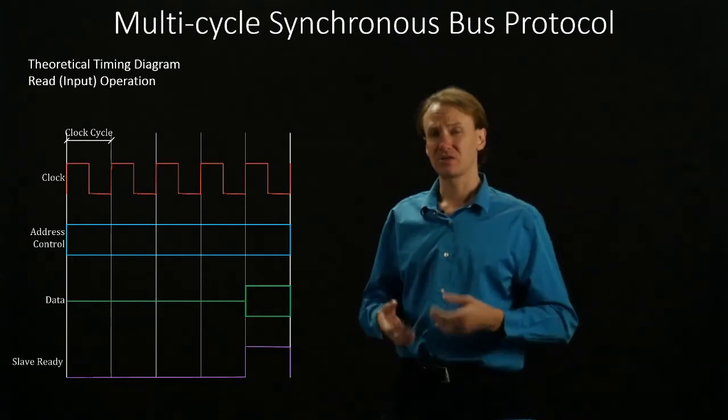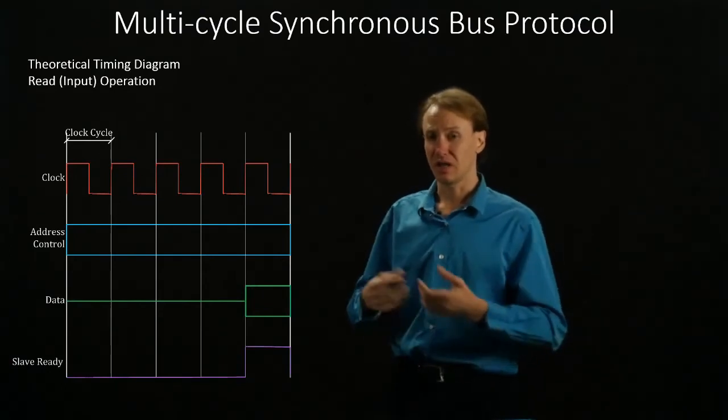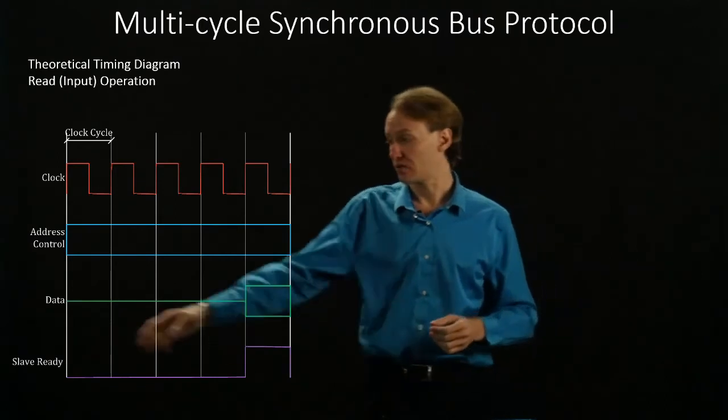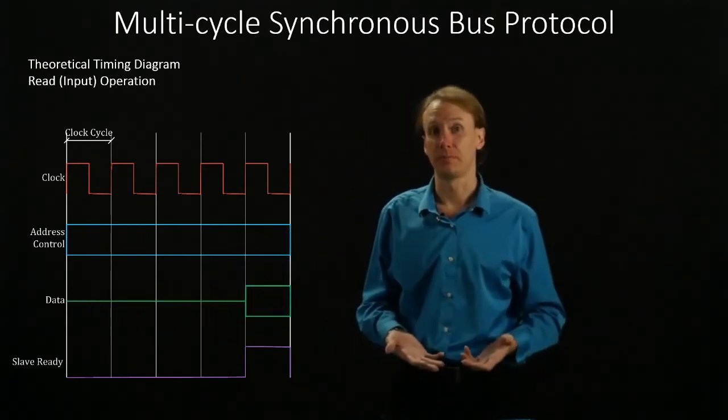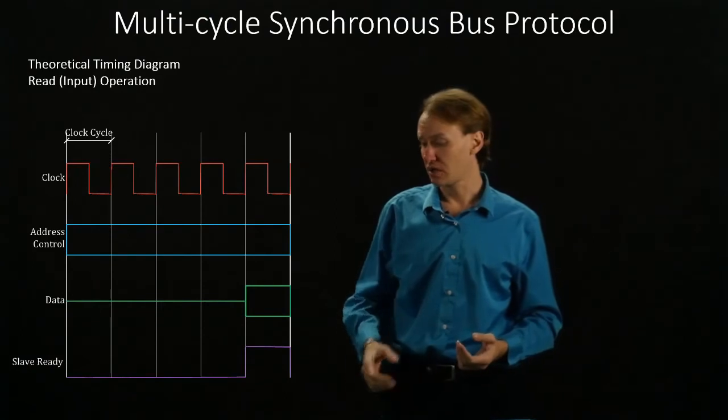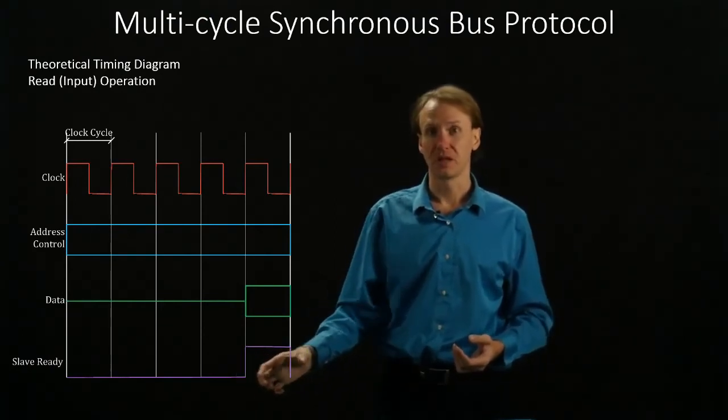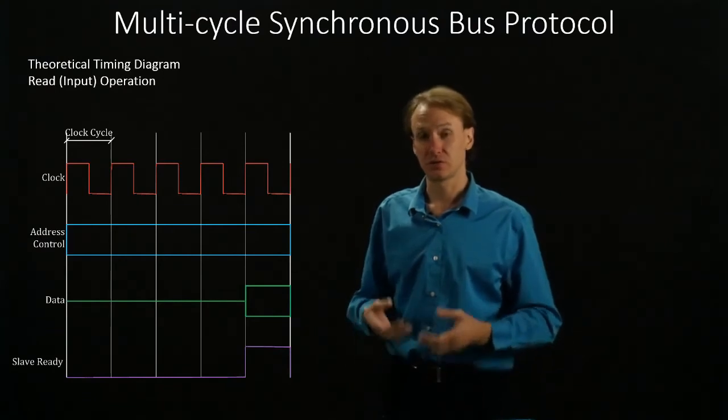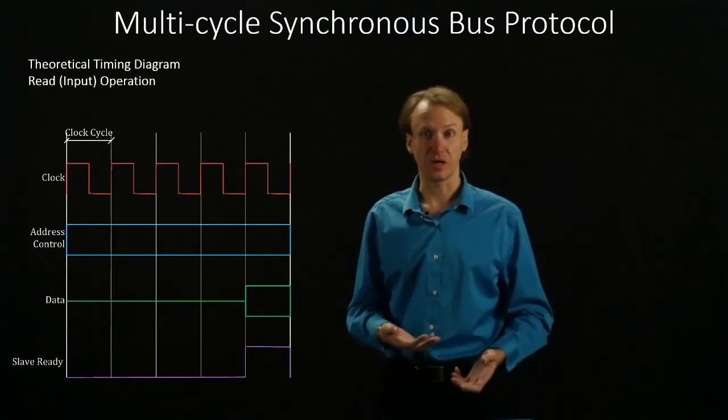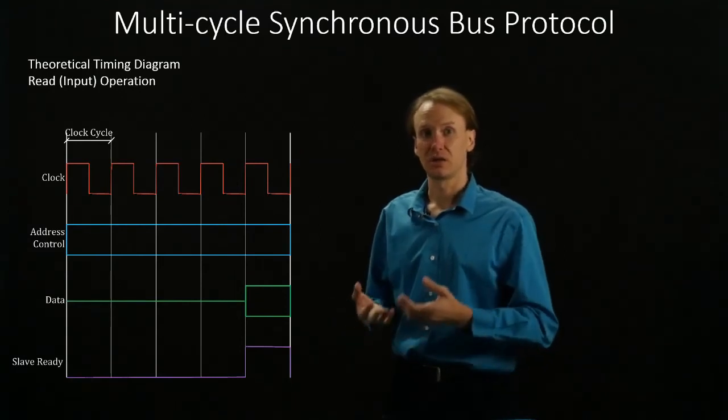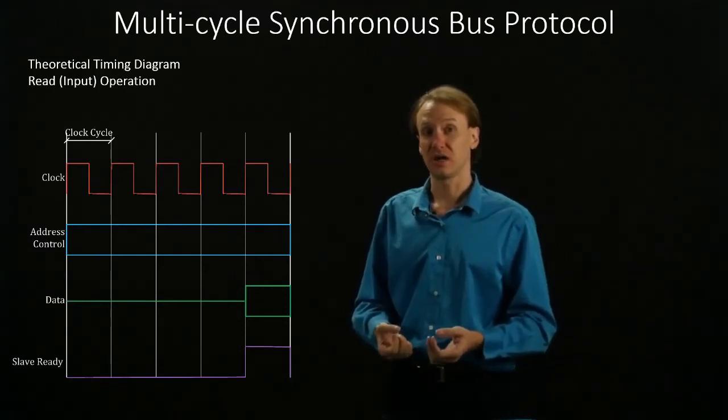This time, the master isn't just going to automatically know that the data is available at the end of the clock cycle. Because we now have several clock cycles where that data isn't available. So this time, the slave is going to assert a slave ready signal. This indicates to the master, or anything else on the bus, that the slave has put some data on the bus. And anybody that's interested in this data can read it off.